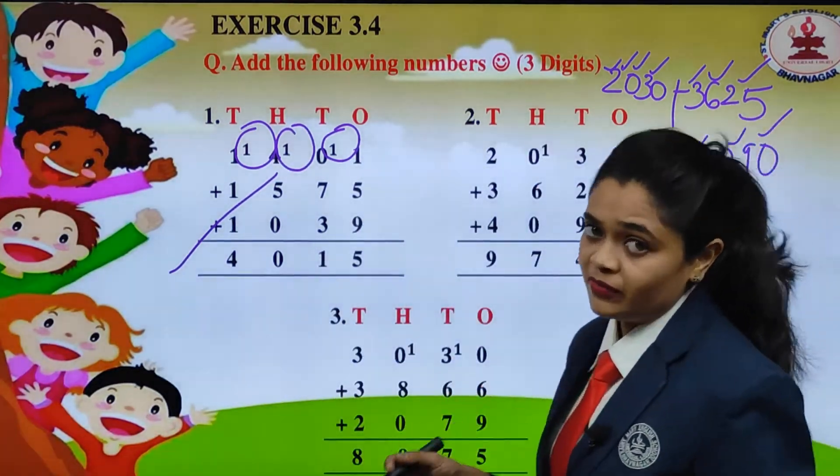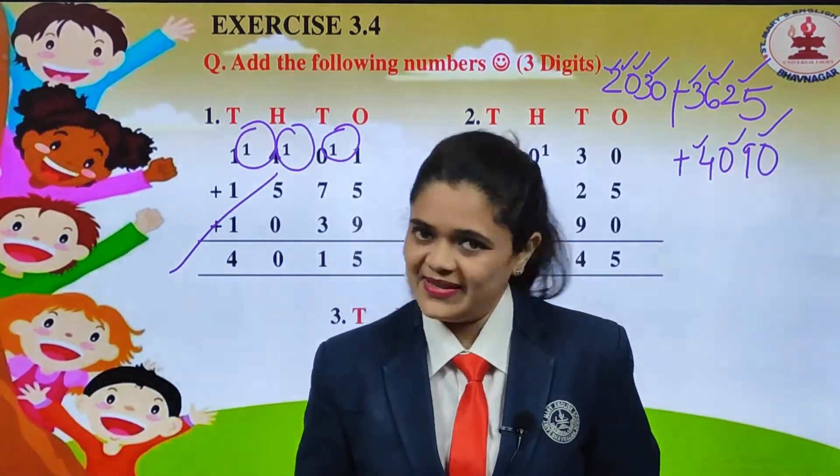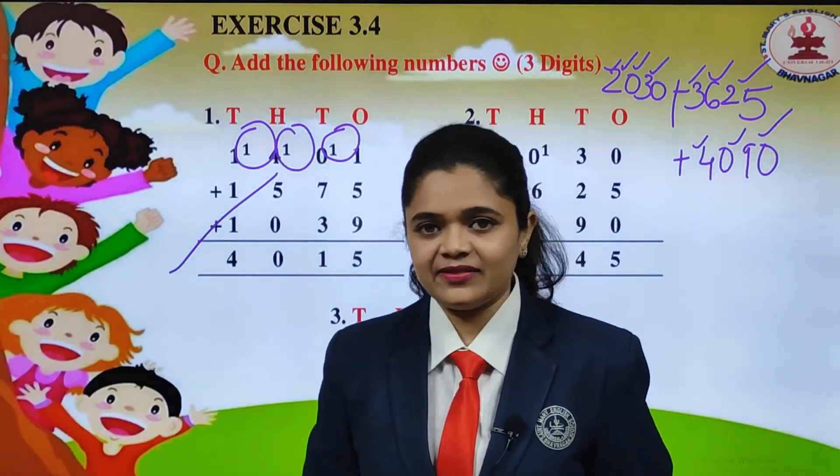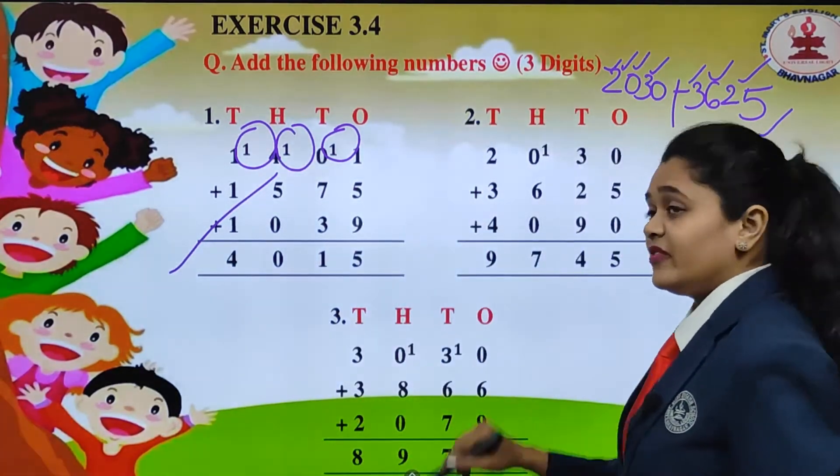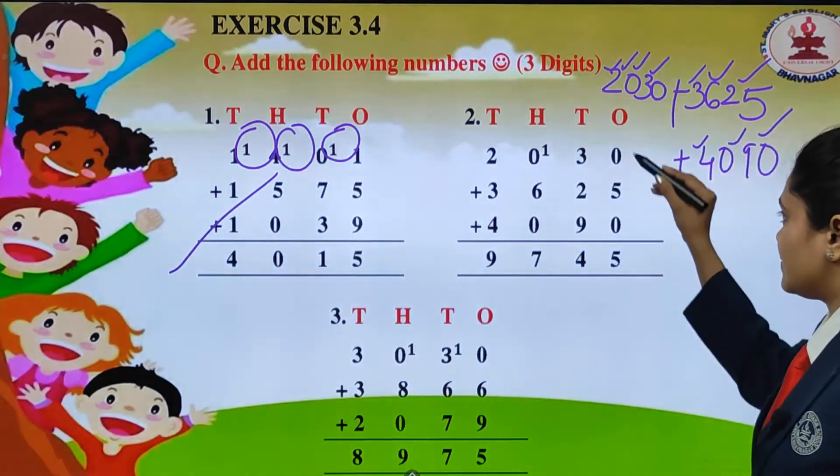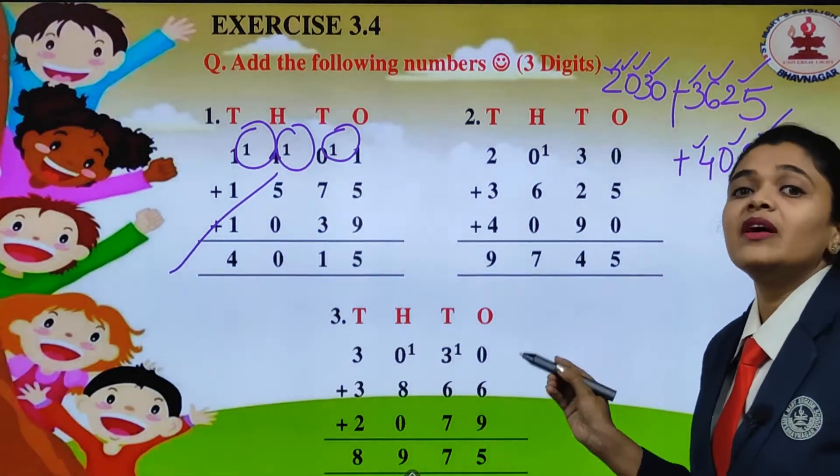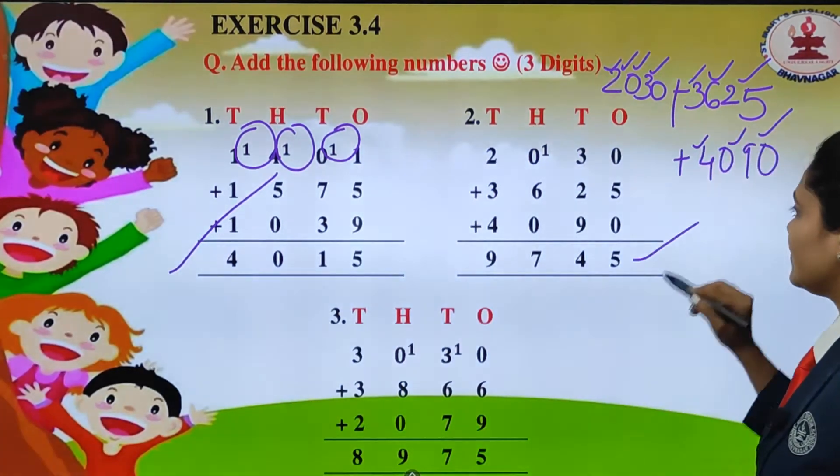0 plus 5, what must we get? We will get 5. 5 plus 0, we will get 5. So in the ones place we get 5.